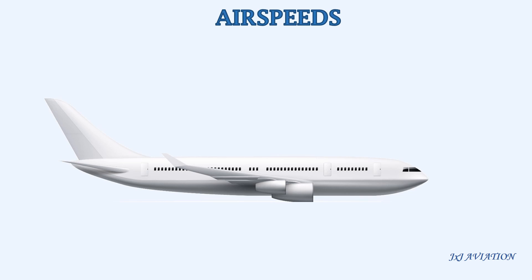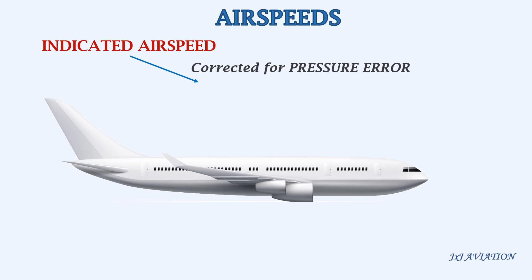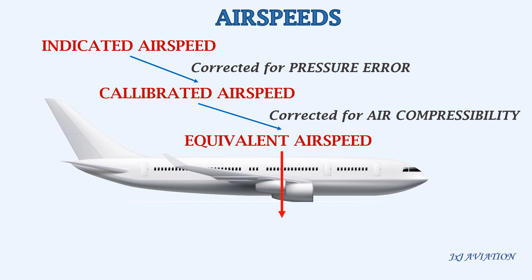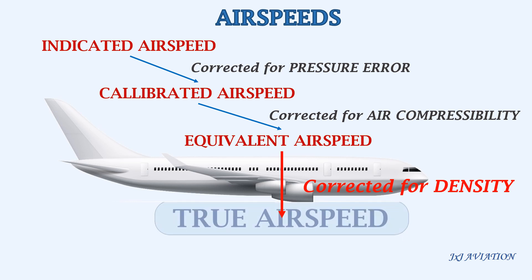Let's look at airspeeds in more detail. The indicated airspeed is accurate only at low altitudes. If the indicated airspeed is corrected for pressure error, then it is called calibrated airspeed. If the indicated airspeed is corrected for air compressibility, then we get equivalent airspeed. If the equivalent airspeed is corrected for density at higher altitudes, we get the true airspeed.